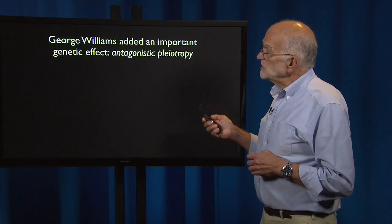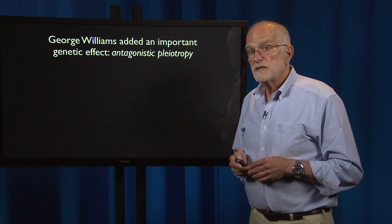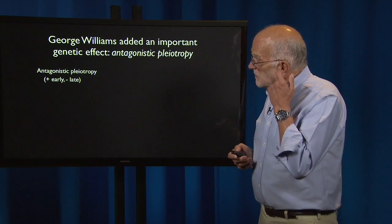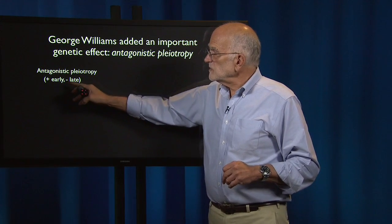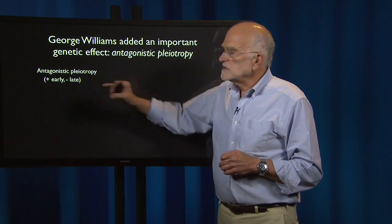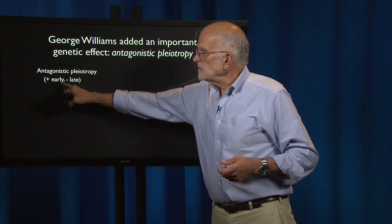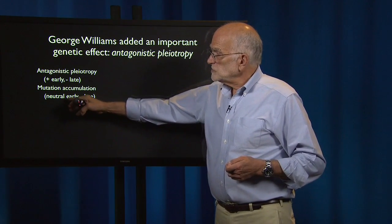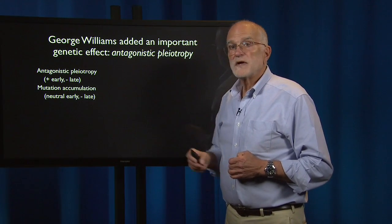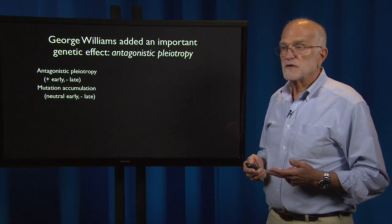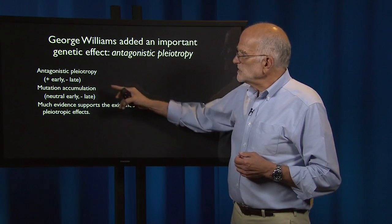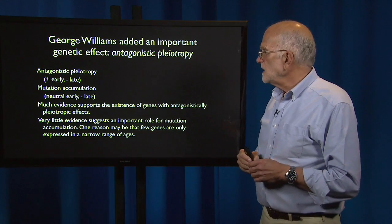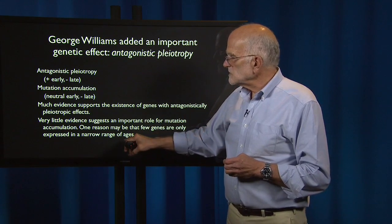That's the first insight. The second insight comes from George Williams, who added an important genetic effect called antagonistic pleiotropy — we've already discussed it with regard to reproduction in Framingham and cancer risk. In antagonistic pleiotropy, a gene has a positive effect on traits early in life and a negative effect late in life: the pleiotropy part means the gene affects two or more traits, and the antagonistic part means it's positive in one set and negative in the other. Another idea is mutation accumulation, where the gene is neutral early in life but has a negative effect late in life. There is a lot of evidence supporting antagonistic pleiotropy and very little evidence suggesting the importance of mutation accumulation, partly because there are very few genes expressed only in a narrow range of ages.